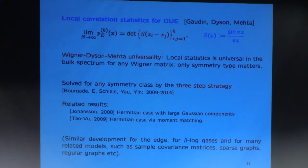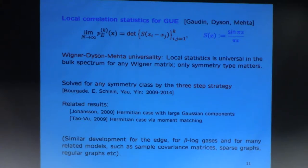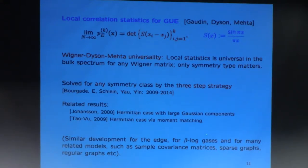This method works only for the complex Hermitian case because it uses the Harish-Chandra formula. There was an independent result by Tao and Vu, done by moment matching — the four-moment theorem — which in the original version was also on the Hermitian case. There have been similar developments for many other models. Here I will talk about bulk universality, but there are results on the edge, results about beta-log gases, sample covariance matrices, sparse matrices, sparse graphs, Erdős-Rényi graphs, regular graphs, and so on.